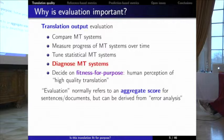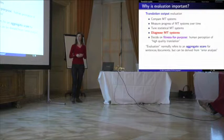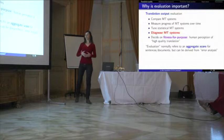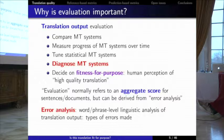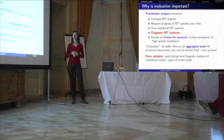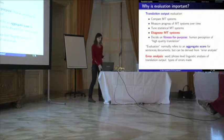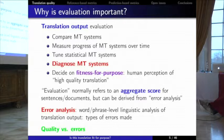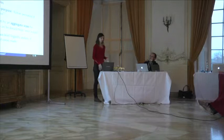Just a little bit on terminology: I'm talking about evaluation and errors. In machine translation, evaluation normally refers to some aggregate score for either a sentence or a document, which could be derived from error analysis. Error analysis is the fine-grained analysis done at either the word or phrase level, normally based on some linguistic input. This is why in the title I have quality prediction versus error prediction — the techniques we use are not exactly the same.